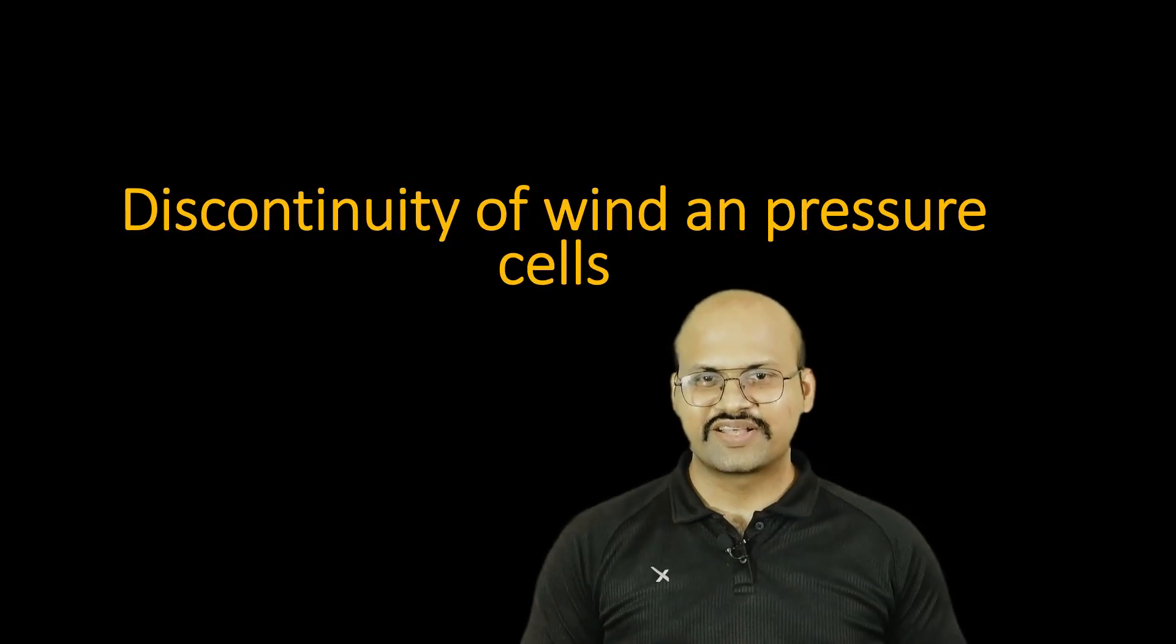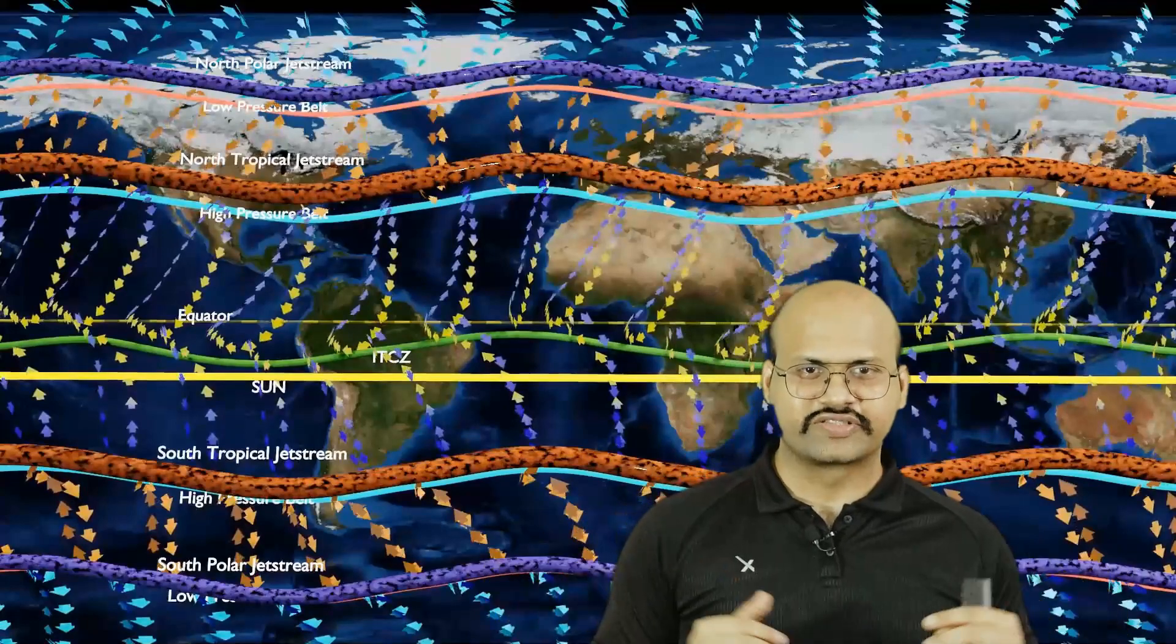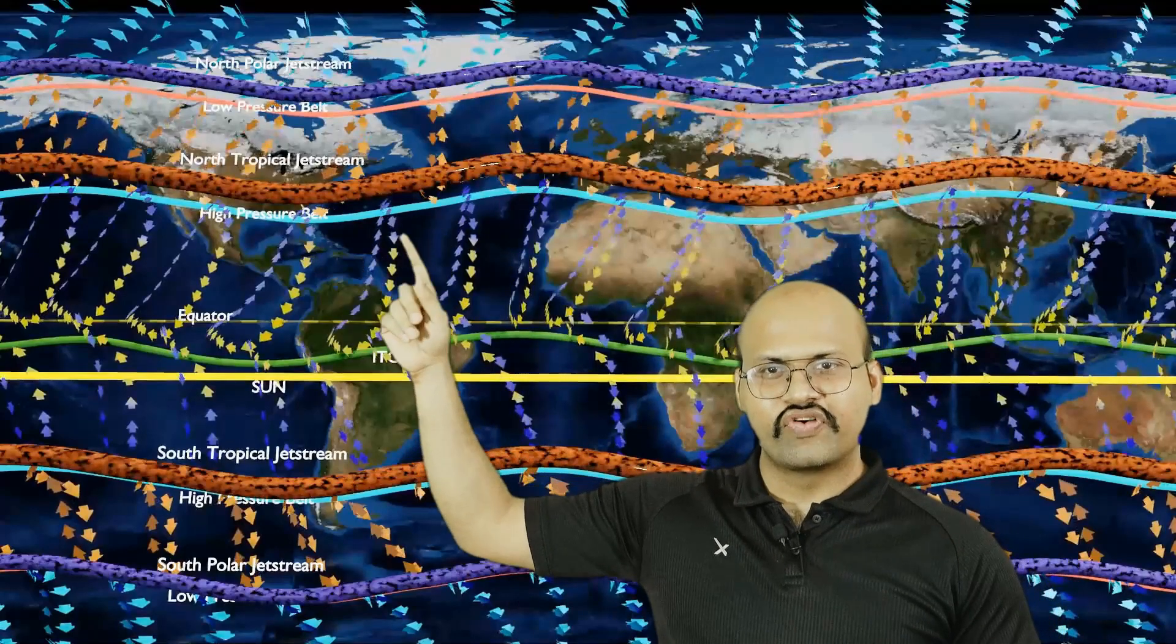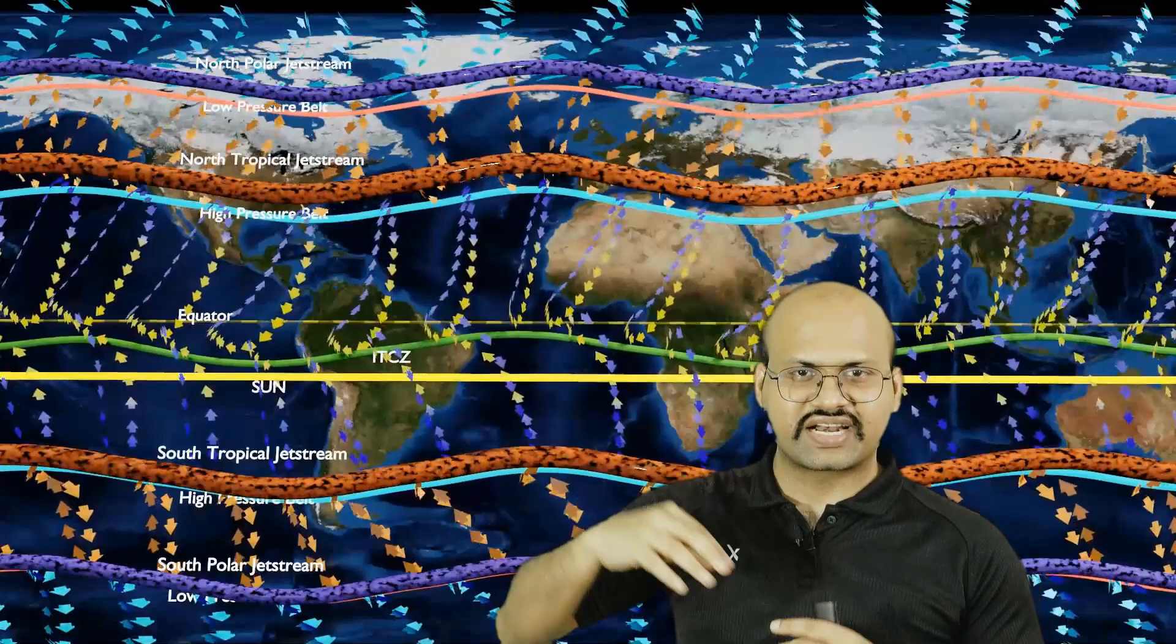Now, while discussing the permanent winds, we saw that all these wind belts as well as pressure belts were shown as single continuous belts. But that is not true in real environment. These belts could be discontinuous. Here we see what we have studied. We can see that all the jet streams and the wind belts and the pressure belts are continuous. But this is not true.